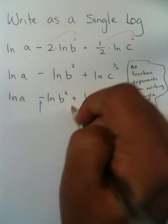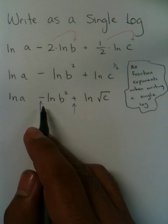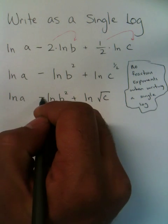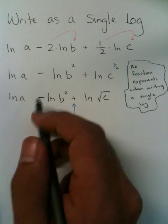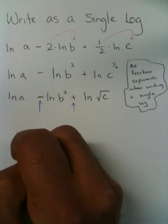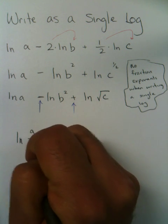We have a subtraction sign. We have an addition sign. You have to go in order the way you read it. So we have to start with this fraction sign. Not this fraction sign, this minus sign. This minus sign is going to give us a fraction. The natural log of a is going to be divided by b squared.